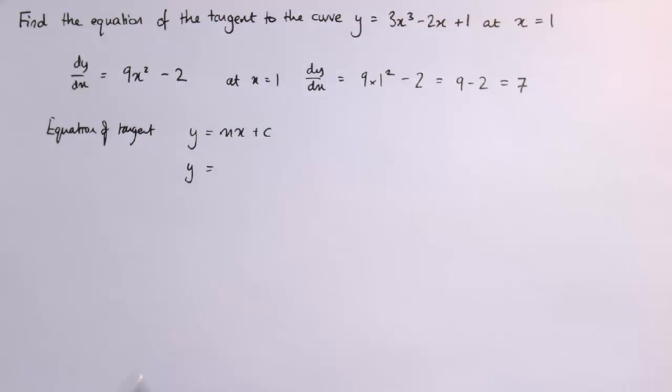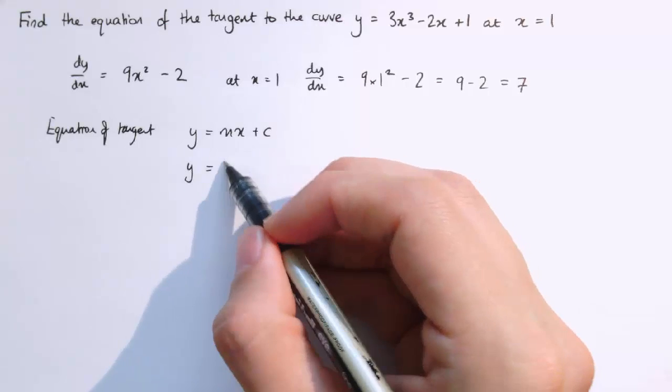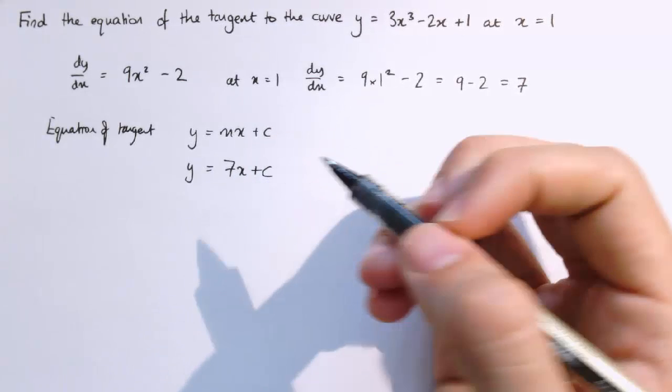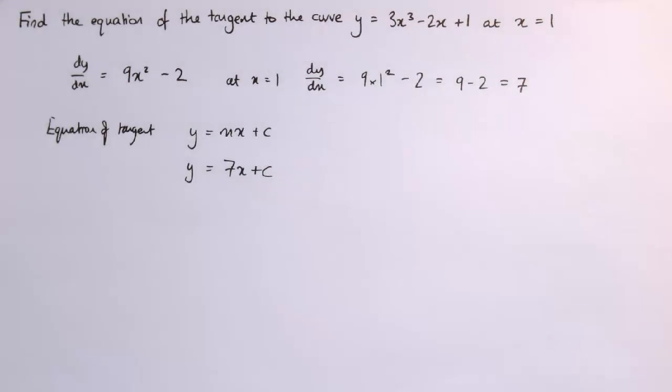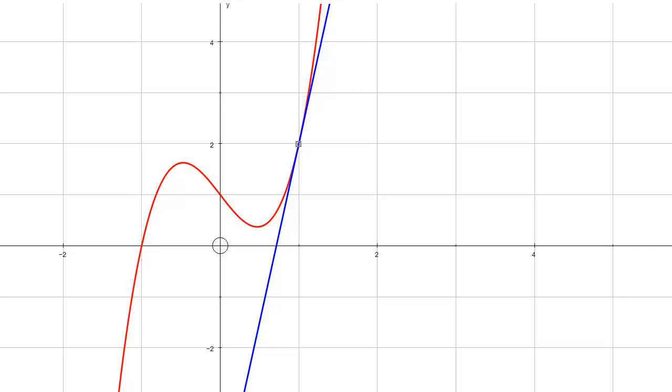We've got y equals 7x plus some constant as the equation of the tangent. To work out c, we need more information. The tangent touches the curve at this point where x equals 1, so it's got the same x and y coordinates at this particular point.